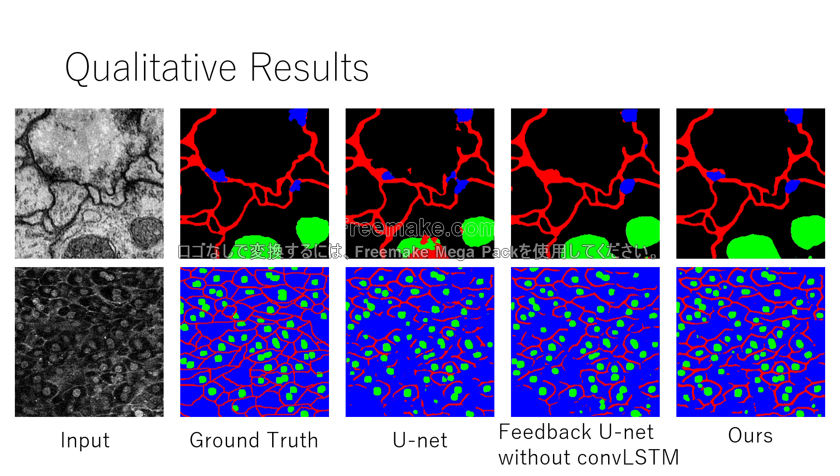This figure shows the segmentation results by each method. First, for Drosophila cell image dataset, feedback U-Net without convolutional LSTM is better than R-UNet on distinction between cell membrane and mitochondria. However, undetected area of synapse standard. In contrast, our approach gave good segmentation results for all classes.